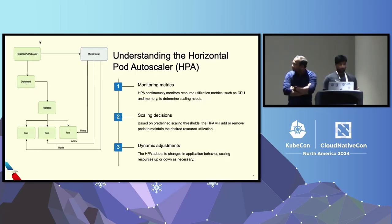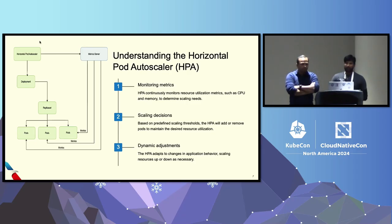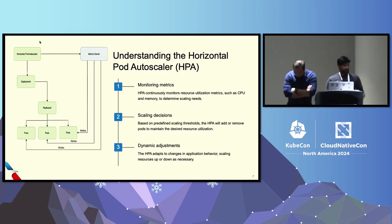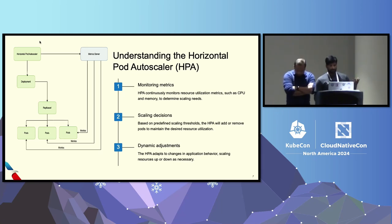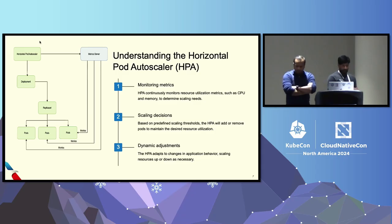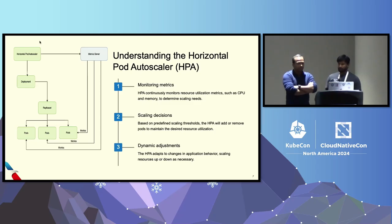Let's deep dive into HPA. How does HPA work? There are three basic things it does: monitoring, scaling decisions based on scaling policies, and dynamic adjustments. HPA continuously monitors resource utilization metrics such as CPU and memory — by default it looks at CPU usage. You define a target metric value, minimum and maximum replicas in your YAMLs, and based on predefined thresholds, HPA dynamically adjusts application scaling.